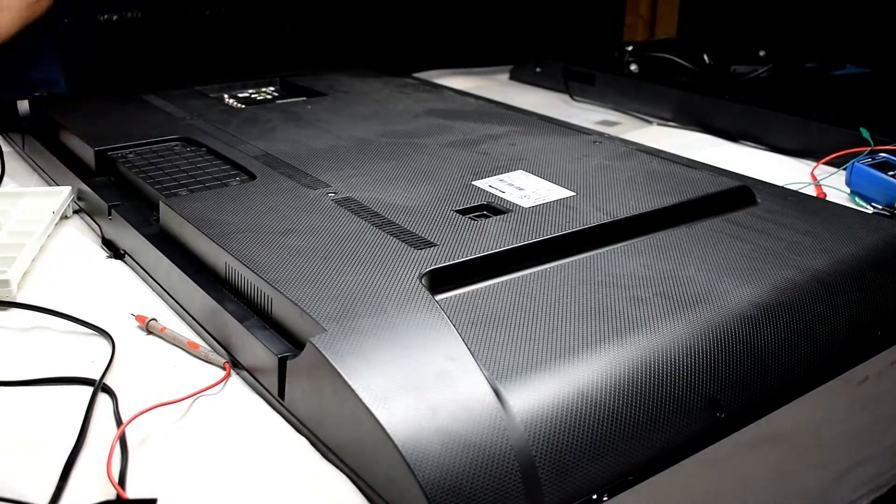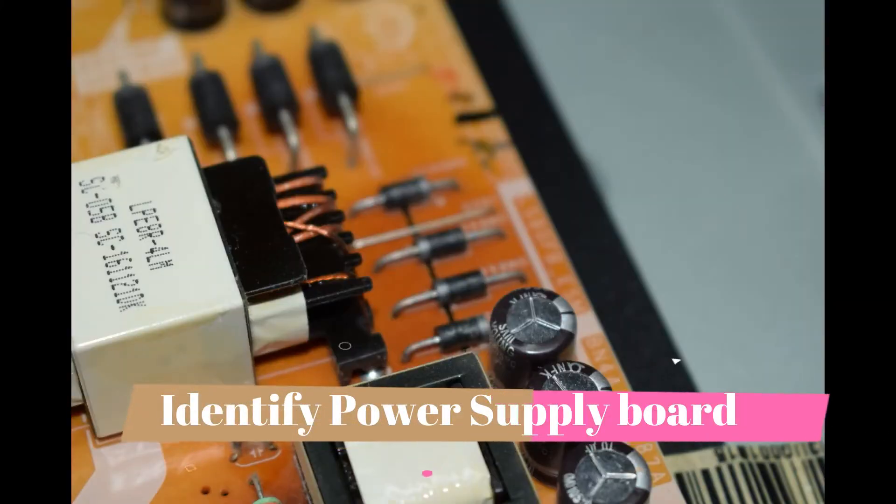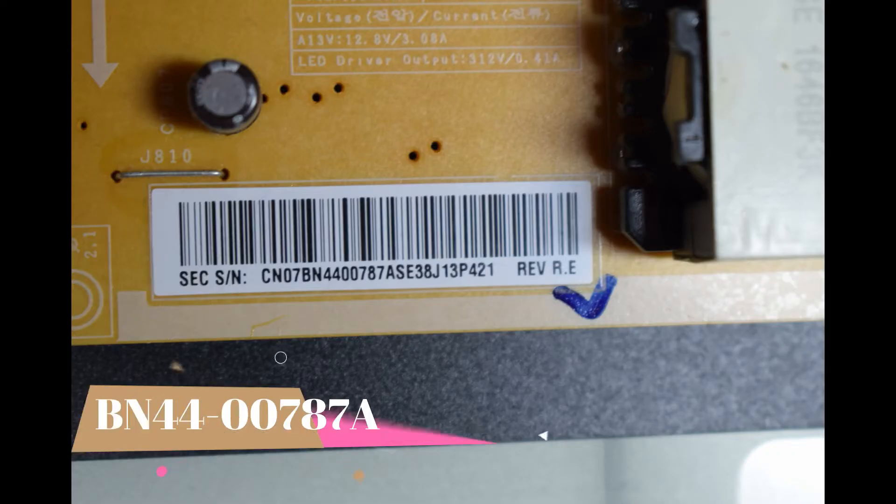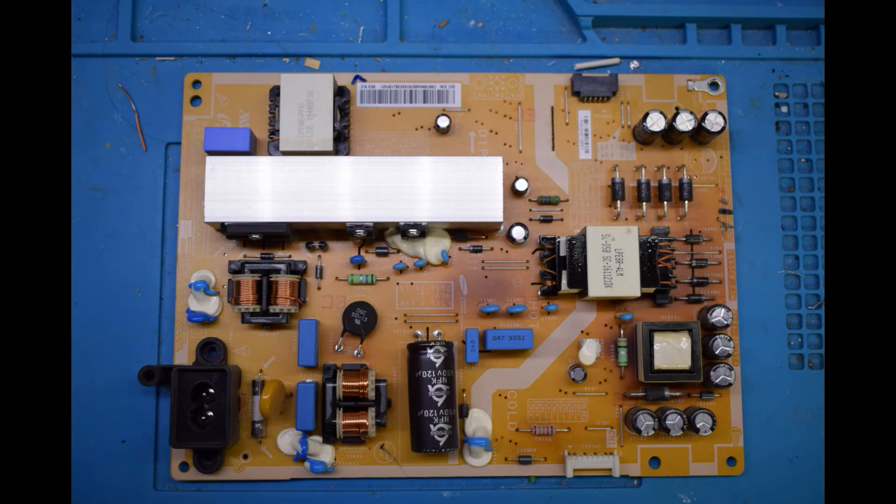When you open it you can see the power supply board, it's kind of orangey color, and you can see that there's some places with damaged parts. So you can get a whole new board.